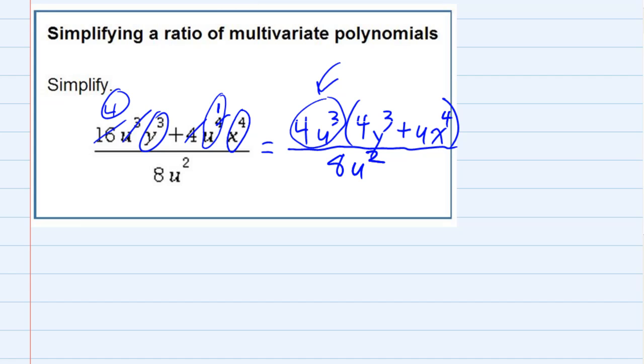So looking at those first terms, I have this four in the top and the eight in the bottom. I can cancel them now that I've got it factored. Four goes into four once, four goes into eight twice. And then the U's. I have two U's in the bottom. That will cancel two of the U's in the top.